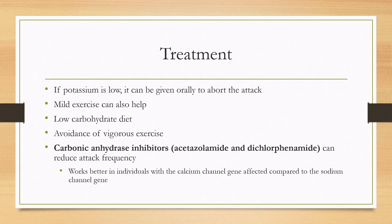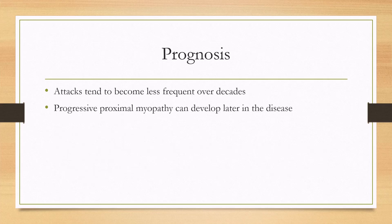Carbonic anhydrase inhibitors also tend to work better in individuals with the calcium channel gene affected as compared to the sodium channel gene. For prognosis, attacks tend to become less frequent over decades; however, later on a progressive proximal myopathy can develop.